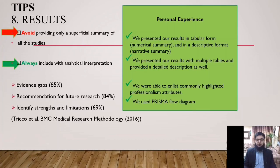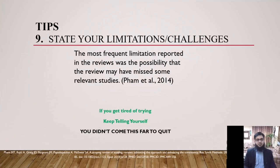Always make sure outcomes are truly consistent with the purpose and always use the PRISMA flow diagram. An interesting finding by Tricco et al. in 2016 found that in most cases the results of scoping reviews were used to identify evidence gaps (85%), provide recommendations for future research (84%), or identify strengths and limitations (69%). You must state your limitations and challenges — the most frequent limitation reported in the literature was the possibility that the review may have missed some relevant studies.